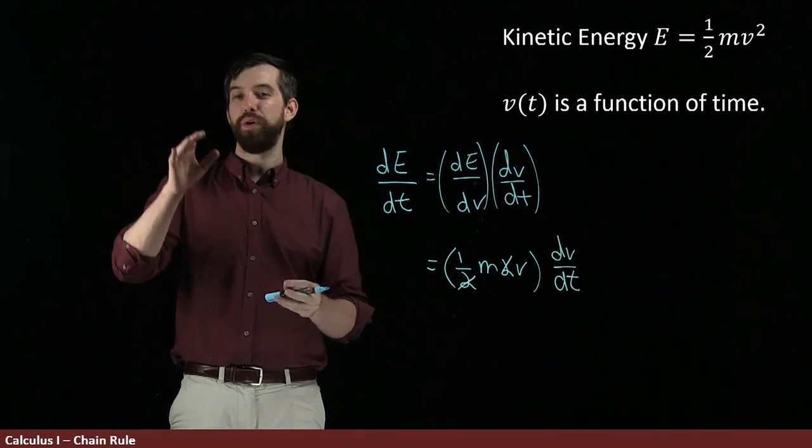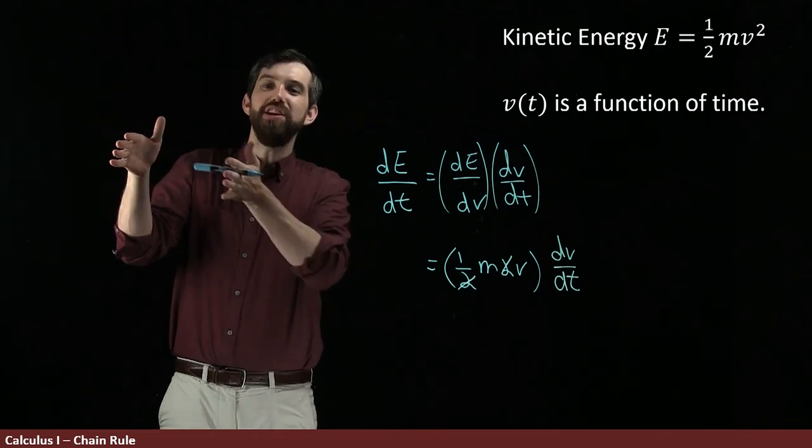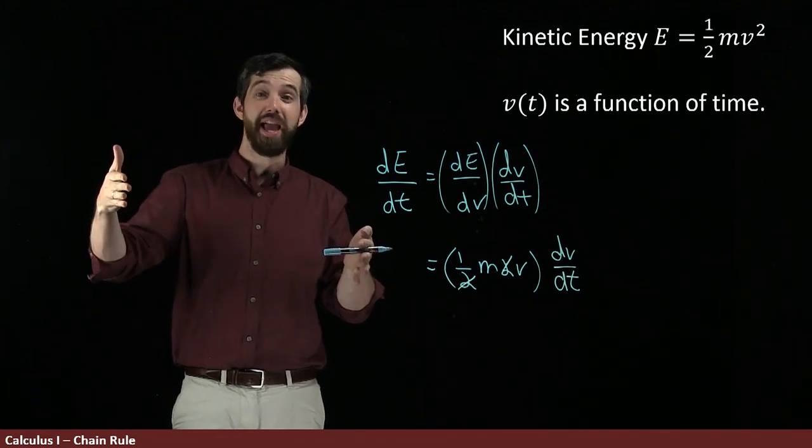So this shows us how we can take the derivative of one variable with respect to another variable, even if they're sort of intermediate variables, because our function really is a composition.